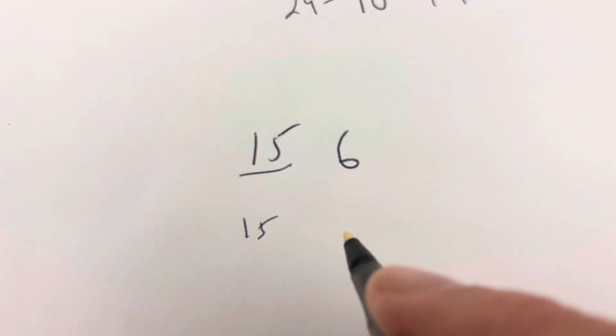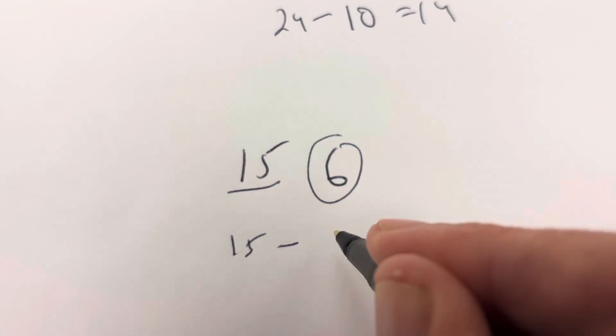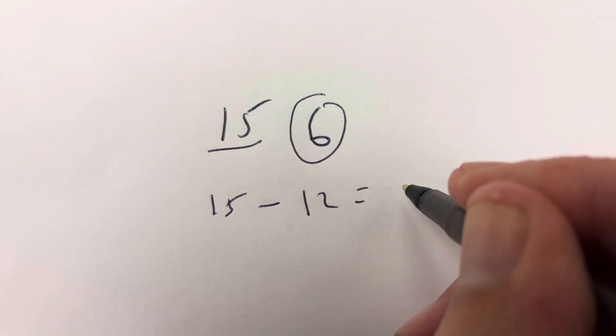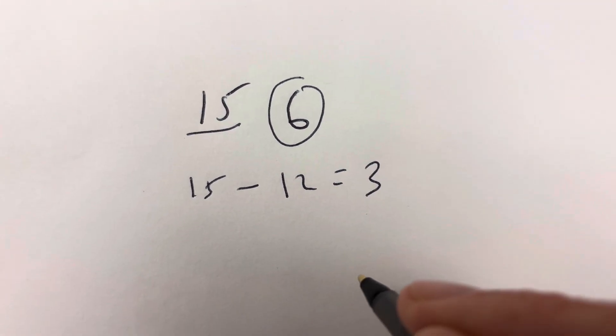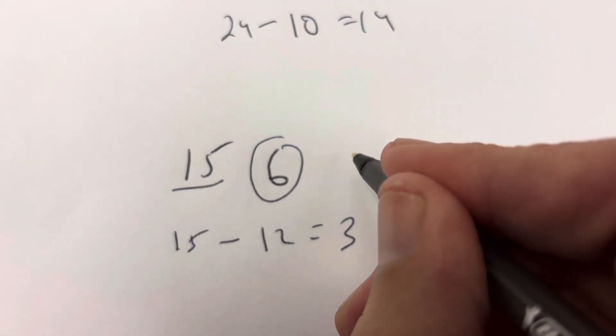156. So we have 15. Underline what's before it. Minus double that last digit. 6 times 2 is 12. 15 minus 12 is 3. And is 3 divisible by 7? The answer is no.